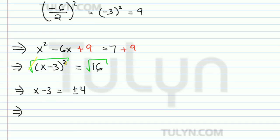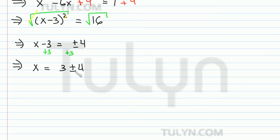So now in our final step to solve for x, we want to add 3 to each side. So x is equal to 3 plus or minus 4, which we can simplify since both are integers. So x is equal to 3 plus 4, which is 7, or x is equal to 3 minus 4, which is negative 1.